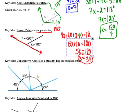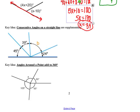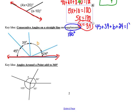The next key idea is similar: instead of just two angles forming a straight line, we can have more than two — called consecutive angles, one right after the other. Any time consecutive angles together form a straight line, they are also supplementary, totaling 180 degrees. So 45 plus 39 plus b plus 24 must sum to 180. Combining the constants gives 108, so b plus 108 equals 180, meaning b equals 72.